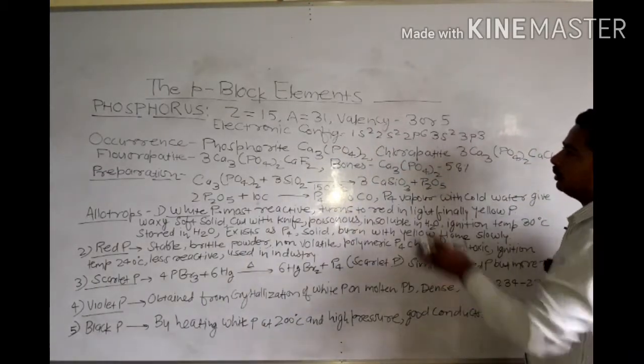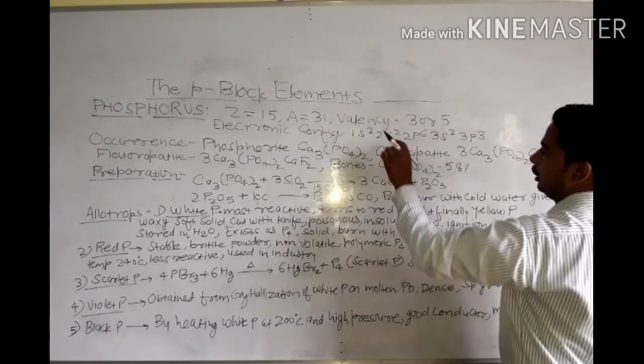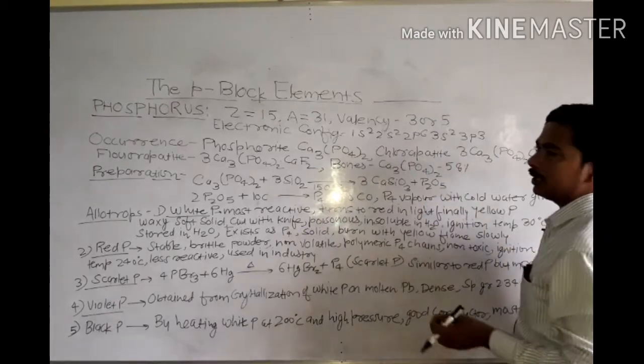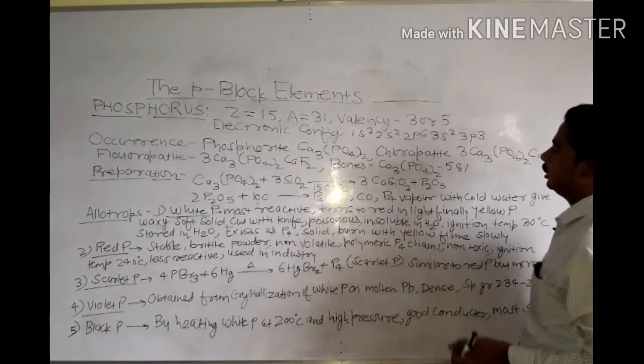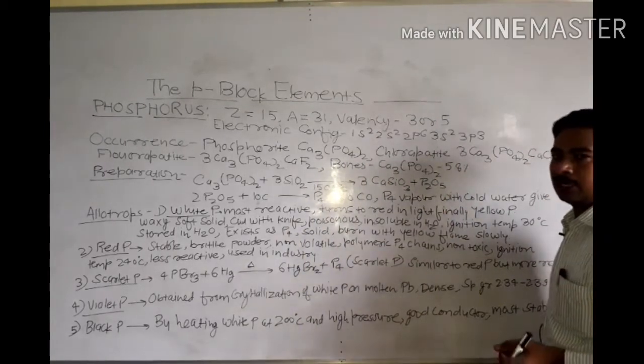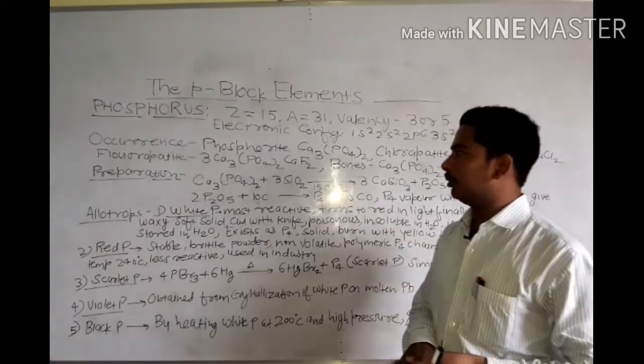Total electrons are 15. First shell has 2 electrons, second shell has 8 electrons, and the third shell has 5 electrons.